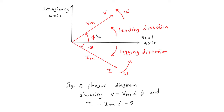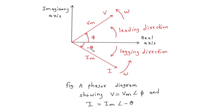So this anticlockwise direction is called the leading direction, and the clockwise direction is called the lagging direction. If the phase angle is positive, it represents a leading phase difference, and when the phase angle is negative, it represents a lagging phase difference. For V equal to Vm at an angle of phi, Vm is the maximum value or amplitude, and omega represents speed of rotation — it is equal to 2 pi f. Here phi is positive and theta is negative, meaning negative is lagging and positive is leading.